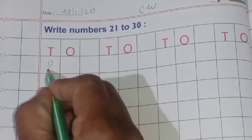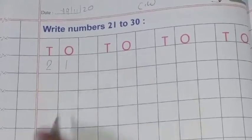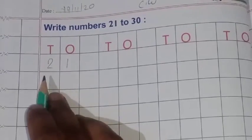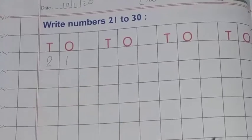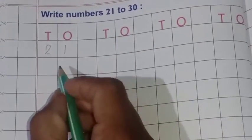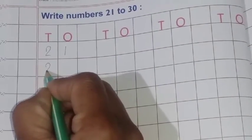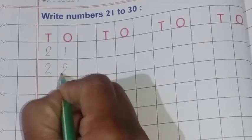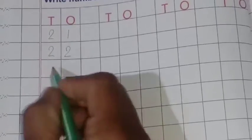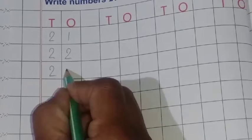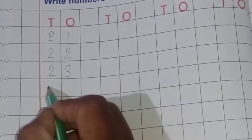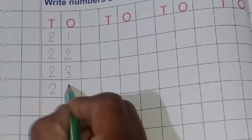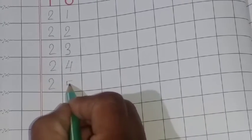2, 1, 21. There are two digit numbers. 2, 2, 22. Okay, 2, 3, 23. 2, 4, 24. 2, 5, 25.